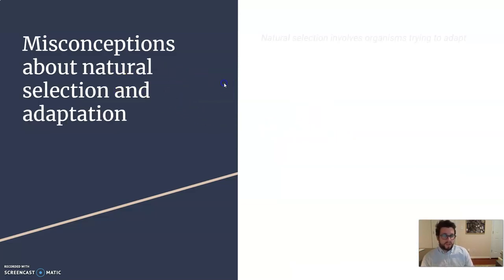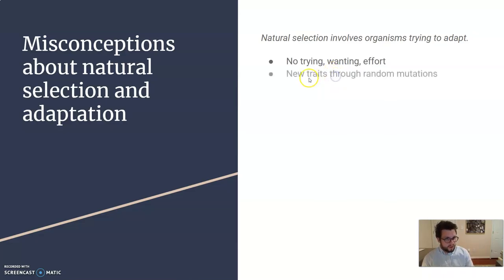Misconceptions about natural selection. Natural selection involves organisms trying to adapt. I see this a lot with students. There is no trying or wanting or effort put in to adapt. You either are adapted or you're not. New traits are going to show up through mutations. The existing traits are switched up through sexual selection. But mutations give us those new traits.